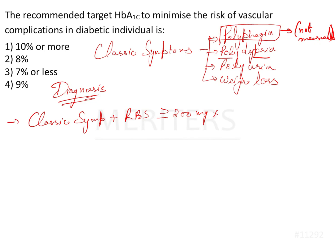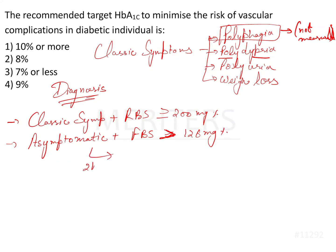What if the patient is asymptomatic? There are chances that the patient can be diabetic as well. In that case, if the fasting blood sugar (FBS) is more than 126 mg%, and if you measure it 2 hours after giving 75g of glucose and the postprandial blood sugar is more than 200 mg%, then you can also consider the patient as diabetic.